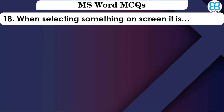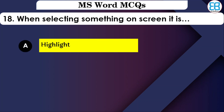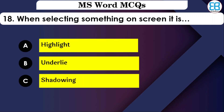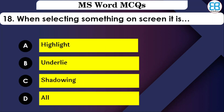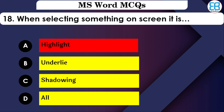When selecting something on screen, the selection is shown using which method? The options are: Underline, Shadowing, or Highlighting. The correct option is Highlight — selected text is shown using highlight.